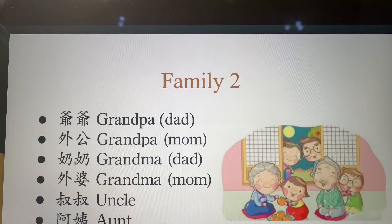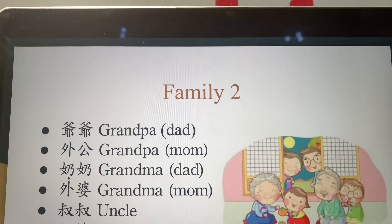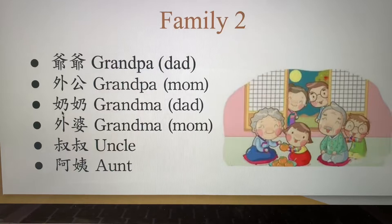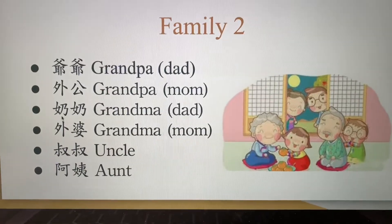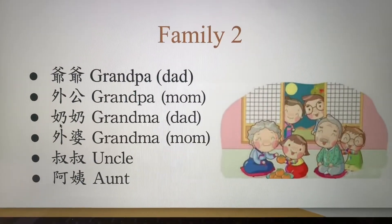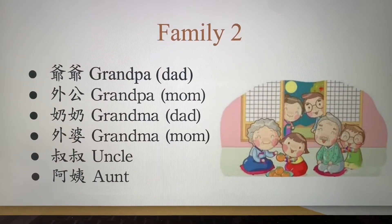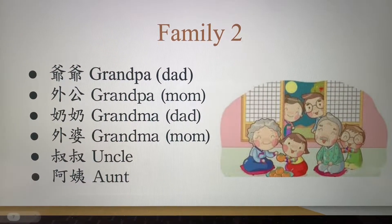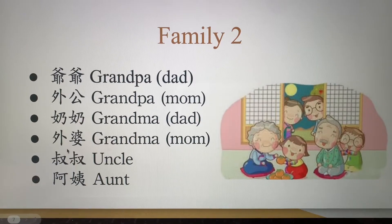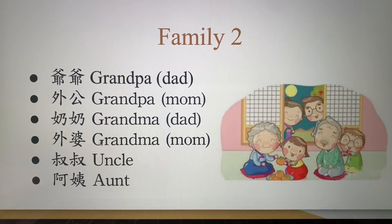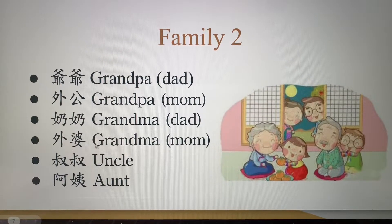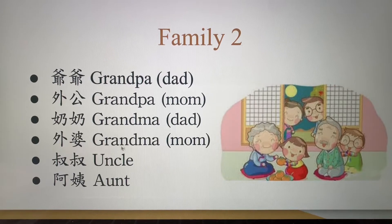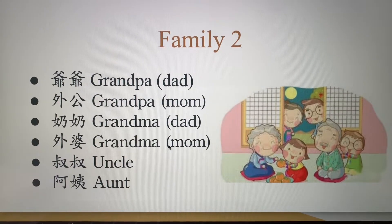The third one is 奶奶. 奶奶 is grandma — it is dad's mother. And the fourth one is grandma: 外婆. 外婆 is mom's mother.